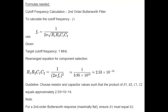Cut-off frequency calculation for a second-order Butterworth filter. To calculate the cut-off frequency F_C, use: F_C equals 1 over 2π times the square root of R1, R2, C1.